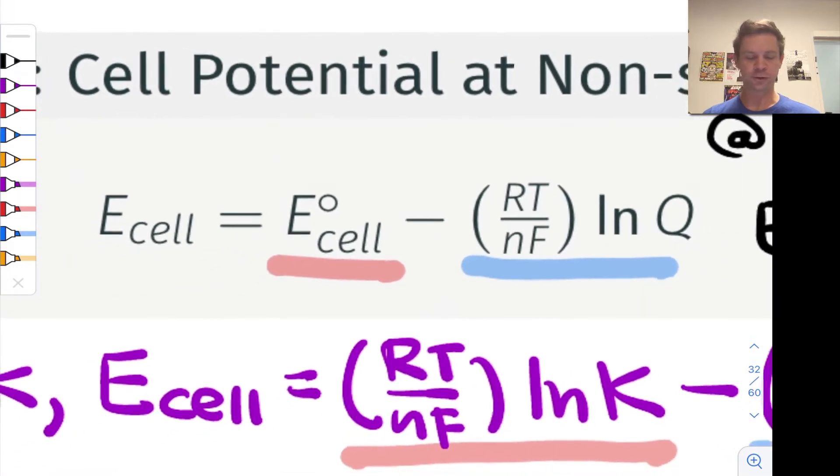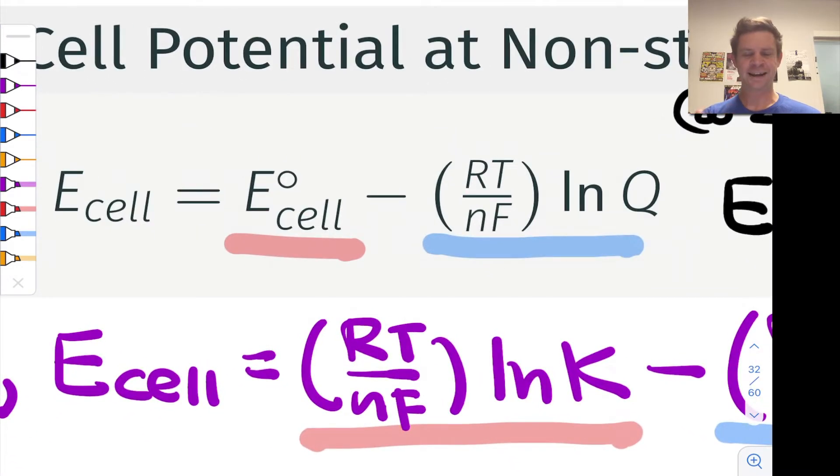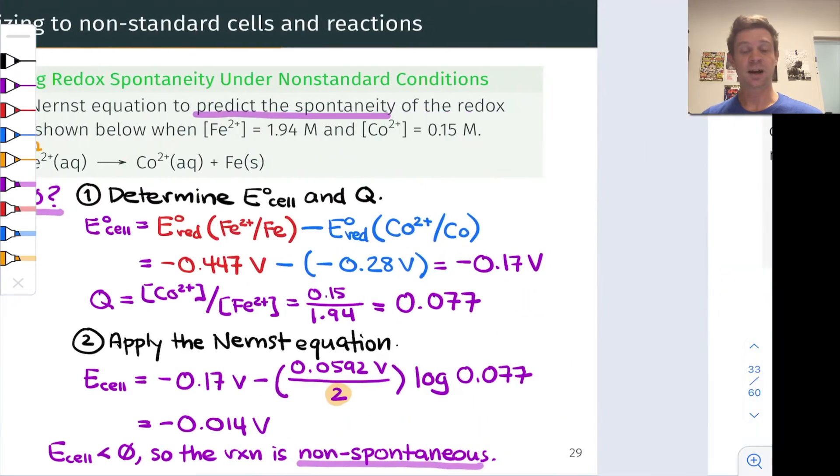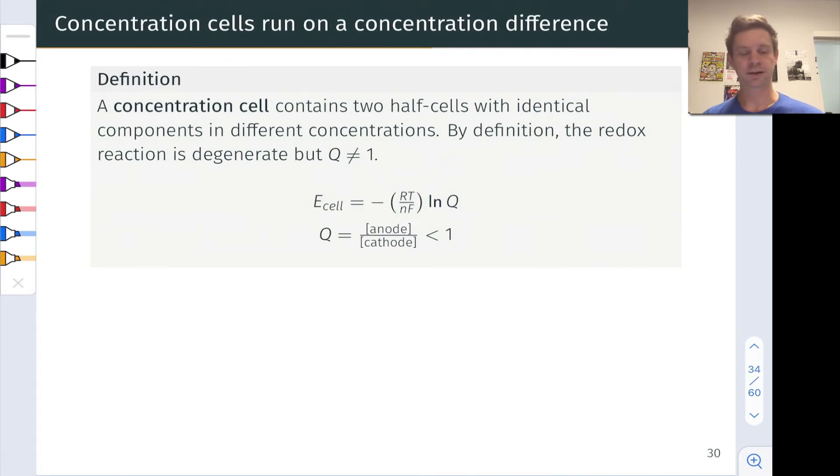If we zoom in on the Nernst equation here for a second, one thing to notice is that even if the standard cell potential is zero, it's still possible to achieve a non-zero, non-standard cell potential by changing the value of Q from one. This is the basis of a special type of galvanic cell known as a concentration cell, and that's the topic of this video.